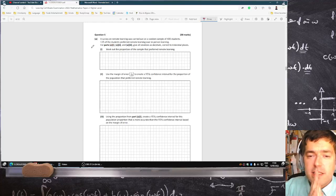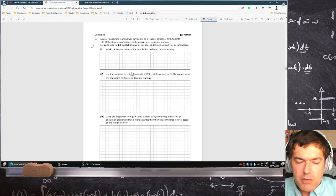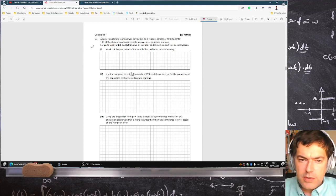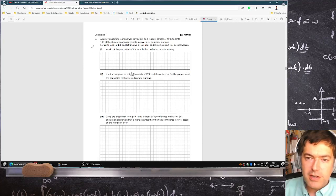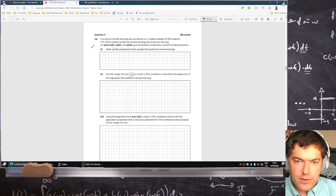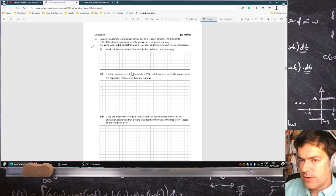All right, statistics time. A survey on remote learning was carried out on a random sample of 400 students. 135 of the students prefer remote learning over in-person learning. For parts A1, 2 and 3, give all solutions as decimals to four decimal places.